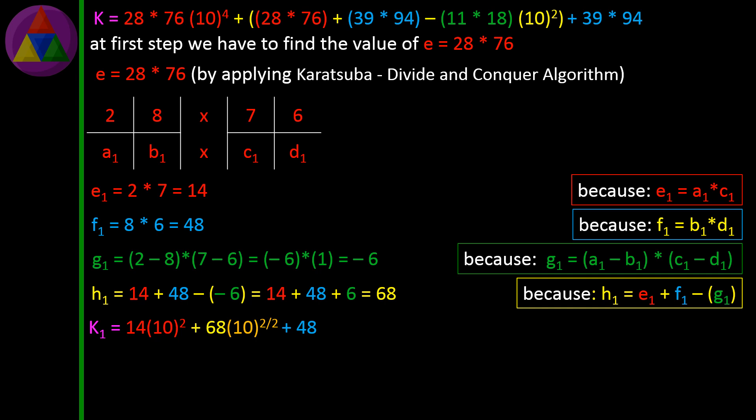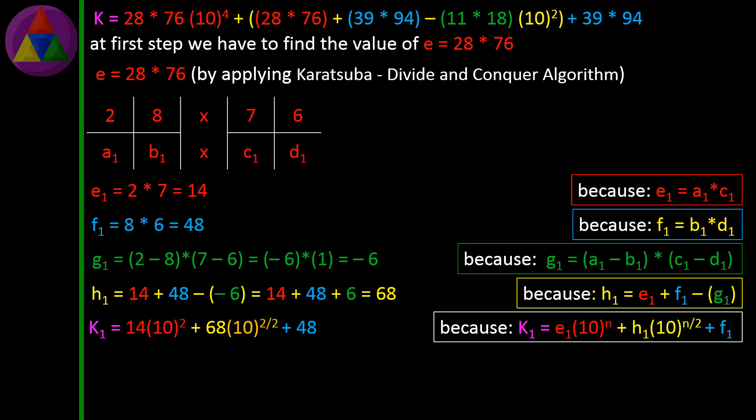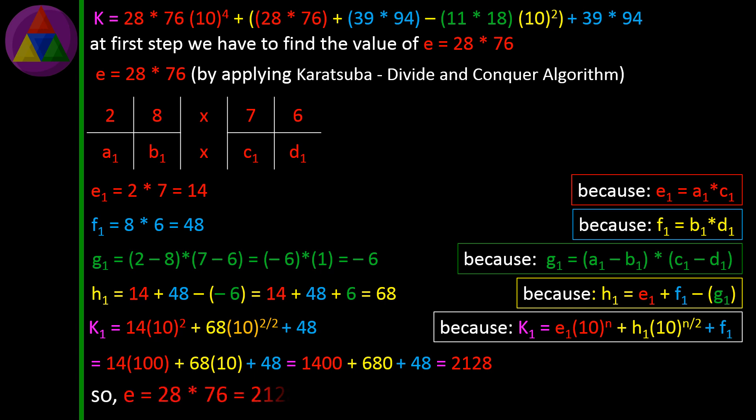K1 = 14×10^2 + 68×10^(2/2) + 48 = 14×100 + 68×10 + 48 = 1400 + 680 + 48 = 2128. So the value of E = 28 × 76 = 2128 using the Karatsuba algorithm.